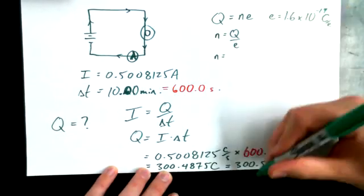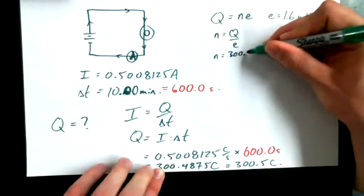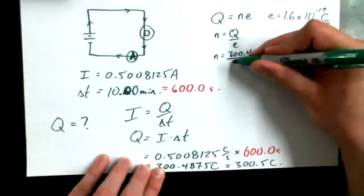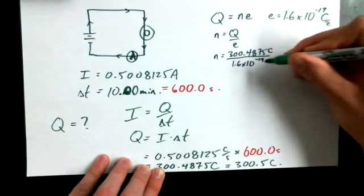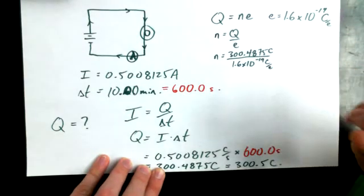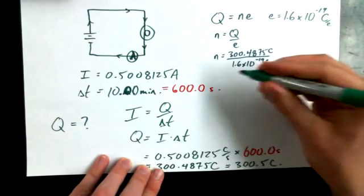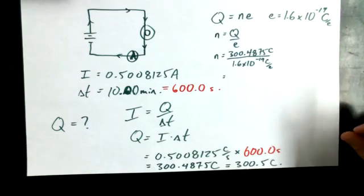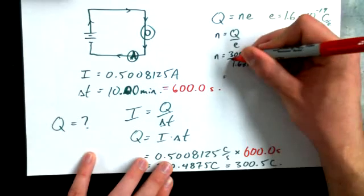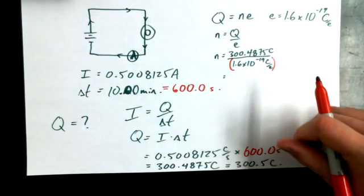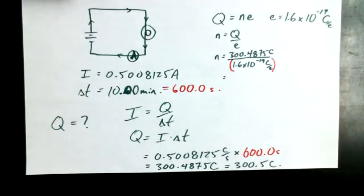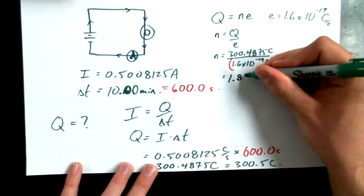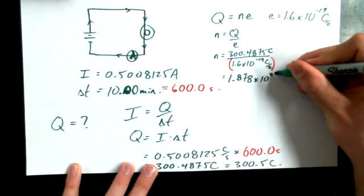So N equals 300.4875 coulombs divided by 1.6 times 10 to the power of negative 19 coulombs per elementary charge. The units on the bottom invert when we divide. When you put this in your calculator, you must put that bottom value in brackets — your calculator needs to know the order of operations. The result is 1.878 times 10 to the power of 21 charges.